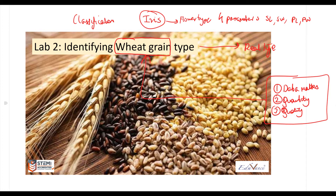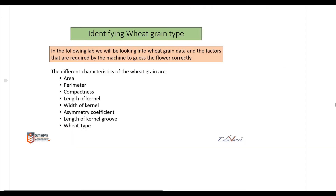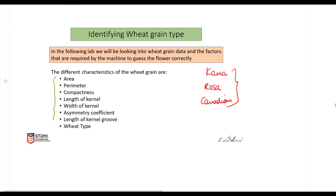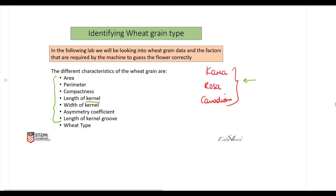The practical example is wheat grain type classification. Essentially there are three types of wheat: one is Kama, another is called Rosa, and the third is called Canadian. Now there are a set of parameters that help us identify which type it is — whether it's the area, the perimeter, the compactness, or the length of the kernel.